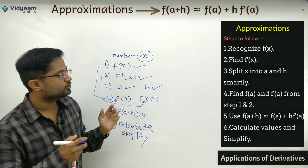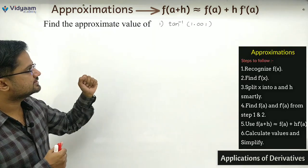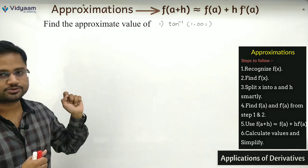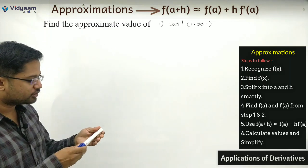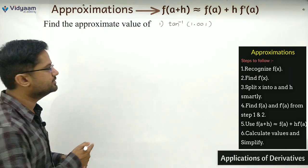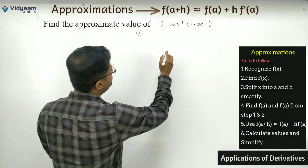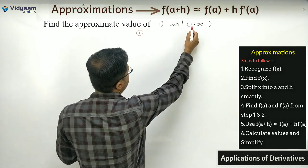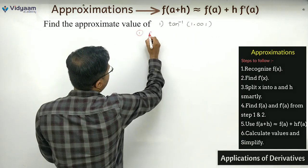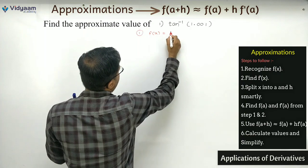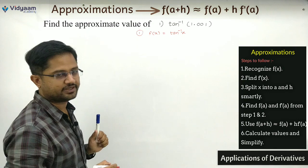Let's move to the next sums. We have to find the approximate value. The sum given is tan inverse of 1.001, so we need to solve this. The basic steps: first, 1.001 is the given value, so x = 1.001. I need to recognize f(x), and very easily I get f(x) = tan inverse of x.